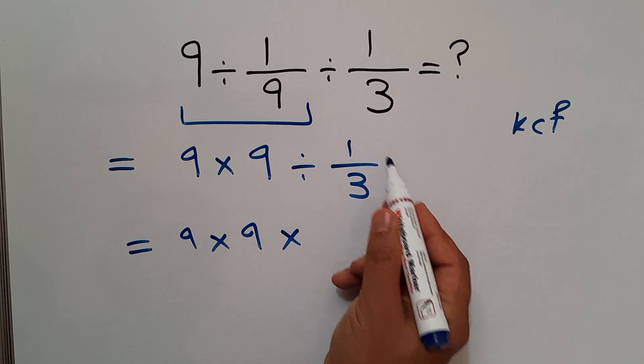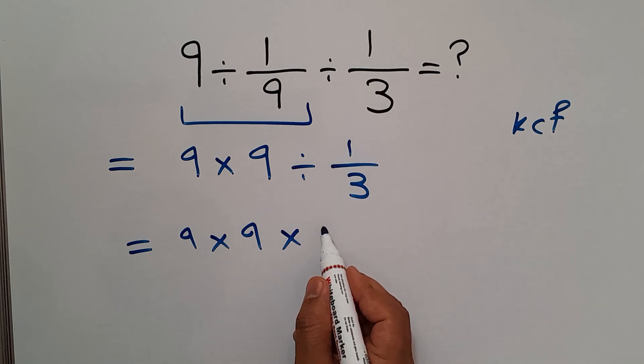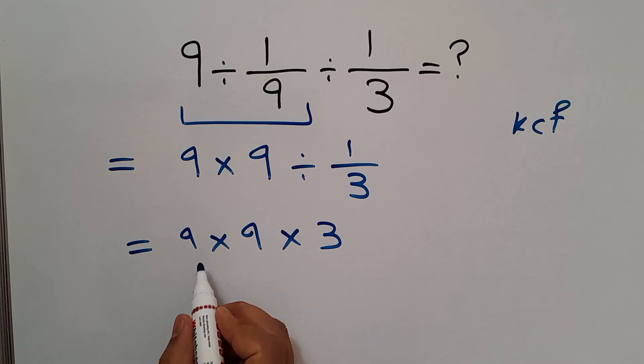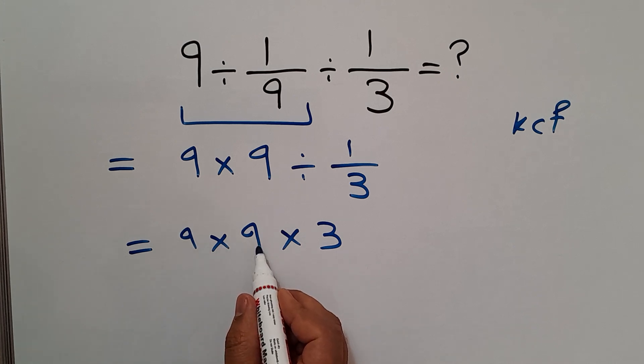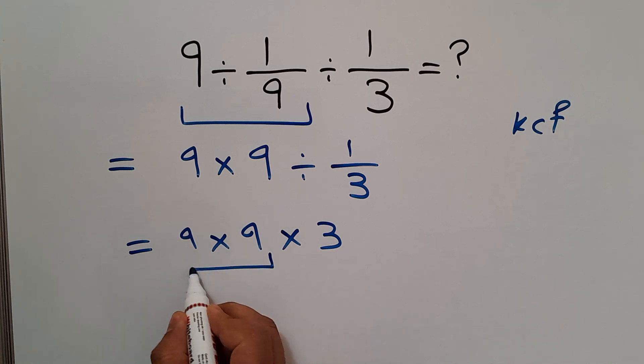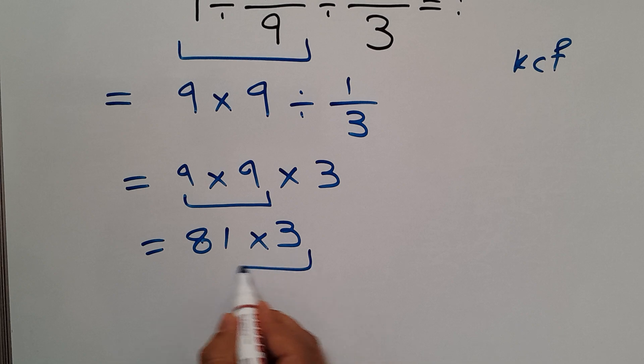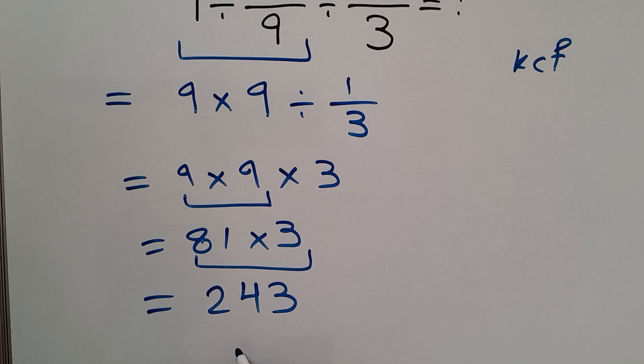And now 9 times 9 equals 81, and 81 times 3 equals 243. So our final answer to this problem is 243.